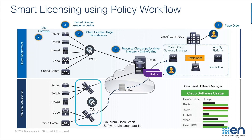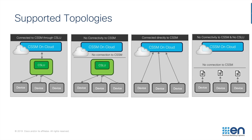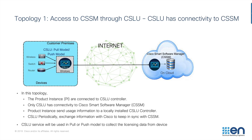With this new model we have the option of four topologies. The first and second are with CSLU in the connected and disconnected state respectively. The third is the device directly connected to CSSM, and the fourth is the device completely air-gapped from CSSM. Topology 1 is where the 9800 is connected to CSLU and CSLU is connected to CSSM. The controller sends usage information to the CSLU via push or pull mode, and CSLU periodically syncs this information with CSSM based on the policy reporting intervals.